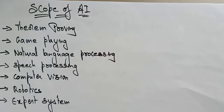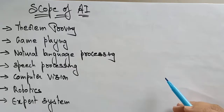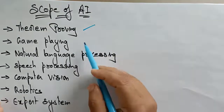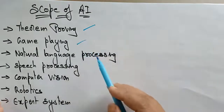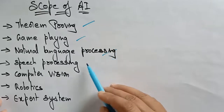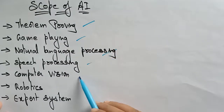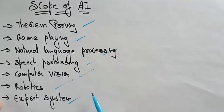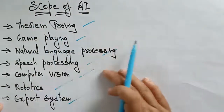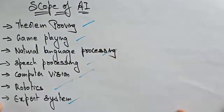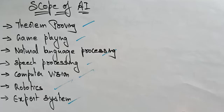Hi students, welcome back. Coming to the next topic in Artificial Intelligence, this is the scope of AI. In this scope of AI, you are going to learn about theorem proving, game playing, natural language processing, speech processing, computer vision, robotics, and expert systems. These all come under the scope of AI. Let's see them one by one.